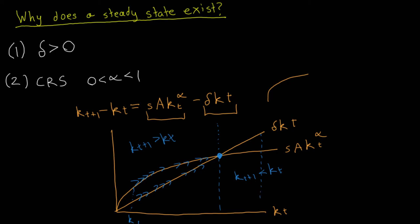Conversely, if capital in period 1 starts to the right of the steady state, depreciation outpaces investment, so capital per capita shrinks over time — but at a decreasing rate, since the gap between the depreciation line and investment curve is shrinking. We again converge to the steady state. So regardless of where we start, whether the economy is growing or shrinking, we end up at the steady state and remain there in the absence of shocks.